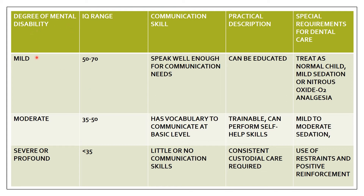The degrees of mental disability are mild, moderate, severe, and profound. Mild is an IQ range of 50 to 70; moderate is 35 to 50; and severe is below 35. Regarding communication: mild patients speak well; moderate patients have vocabulary to communicate at a basic level only; and severe patients have little or no communication skill and cannot talk properly.